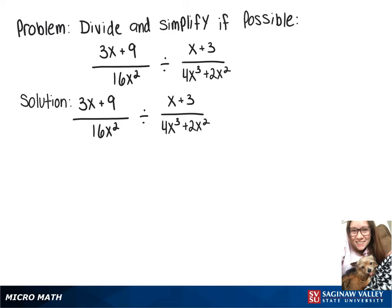In this video we're going to divide these expressions and we know that when we divide by a fraction we have to multiply it by the reciprocal. So this is going to turn into 3x plus 9 over 16x squared times 4x to the third plus 2x squared over x plus 3.